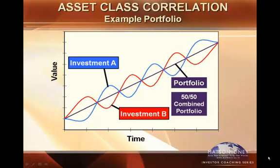Markowitz measured the likelihood of various asset categories moving in opposite directions. It is possible to have two assets that by themselves look fairly volatile, but when you combine them in a portfolio, you actually increase the rate of return and reduce the volatility. So correlation is the cornerstone of diversification.